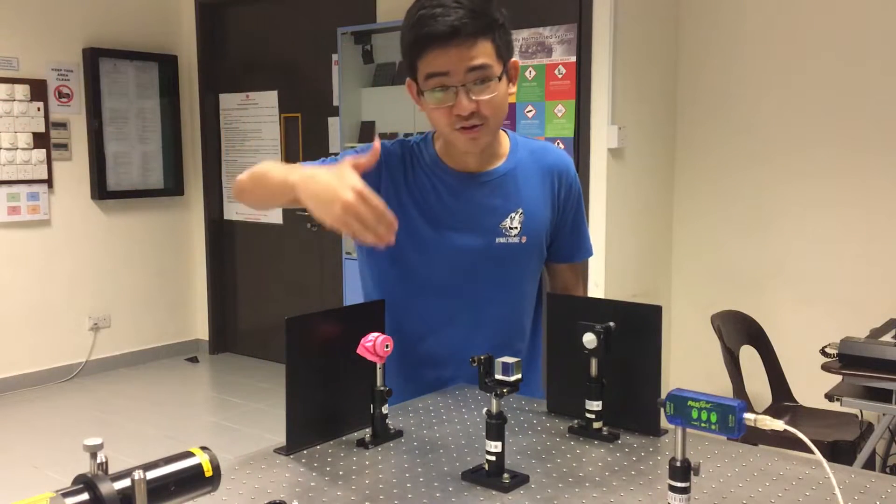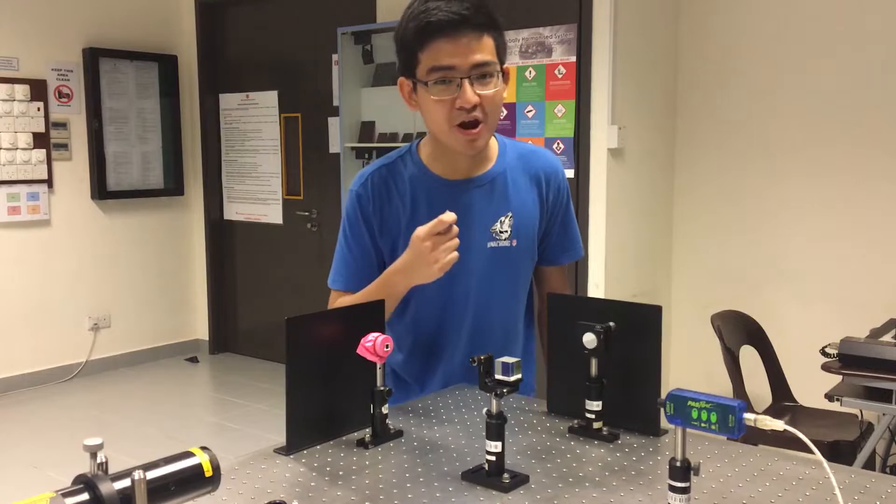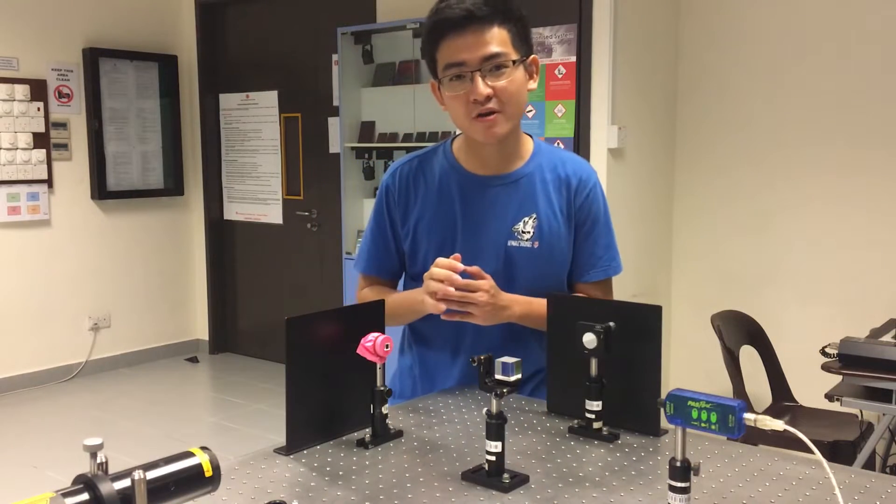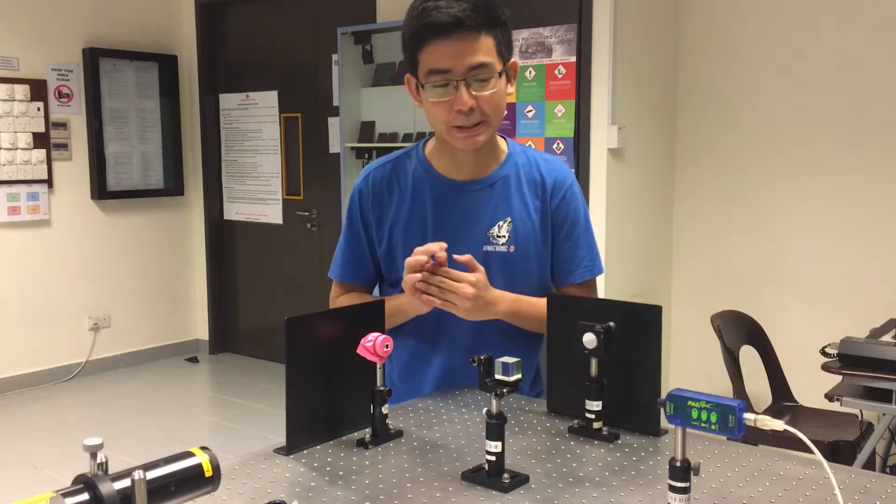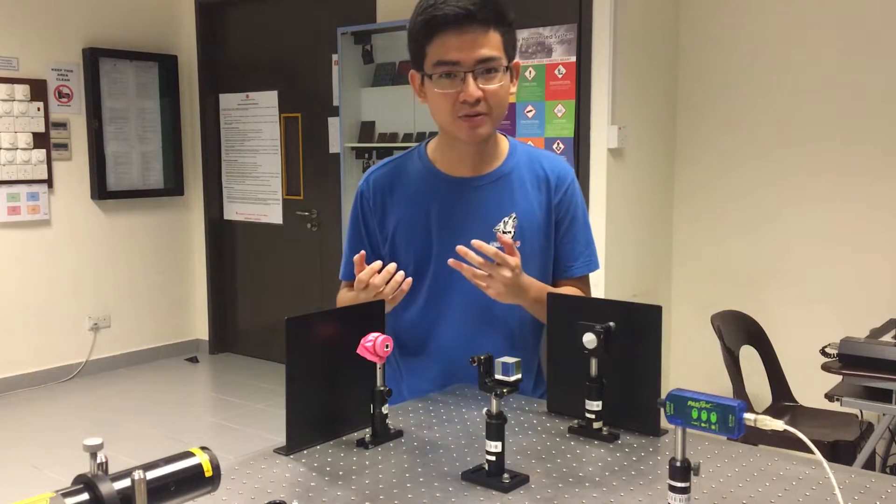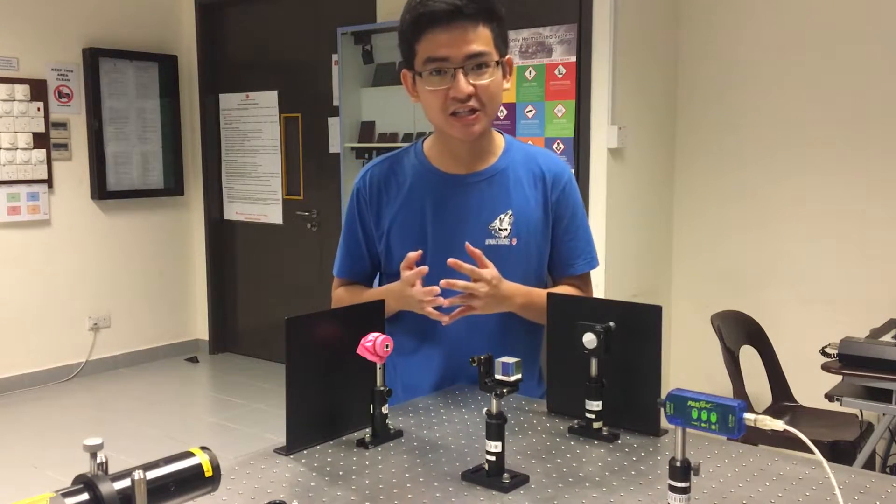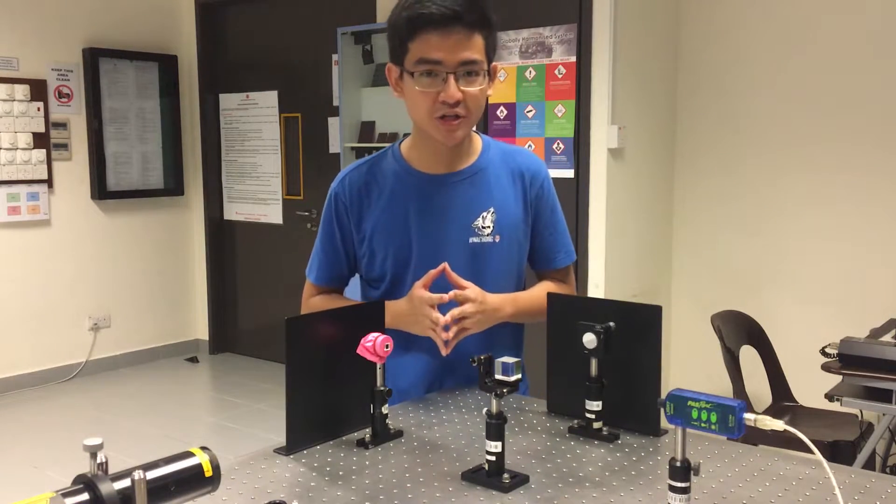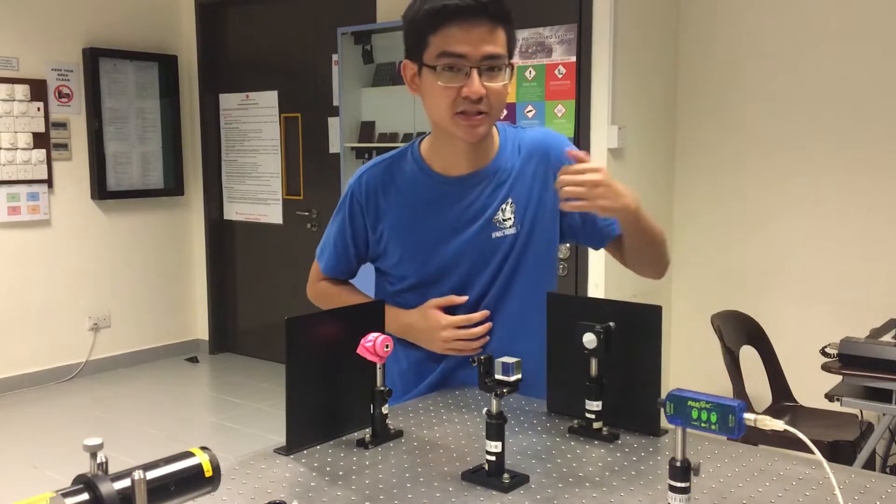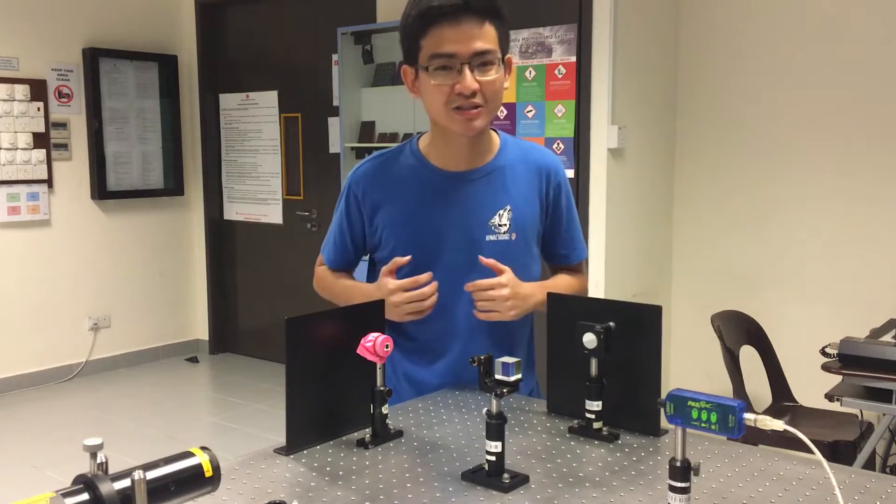So when the sound waves travel here, it will vibrate the membrane of the balloon, causing the mirror position to change slightly. And this change in the mirror position will lead to a change in the interference pattern, which will be picked up by this intensity logger. So let's see how sensitive it is.